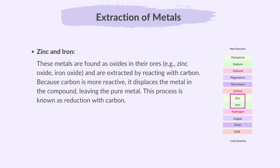Zinc and iron are found as oxides in their ores, e.g. zinc oxide and iron oxide, and are extracted by reacting with carbon. Because carbon is more reactive, it displaces the metal in the compound, leaving the pure metal. This process is known as reduction with carbon. Reduction is a chemical process where a substance gains electrons or loses oxygen atoms.